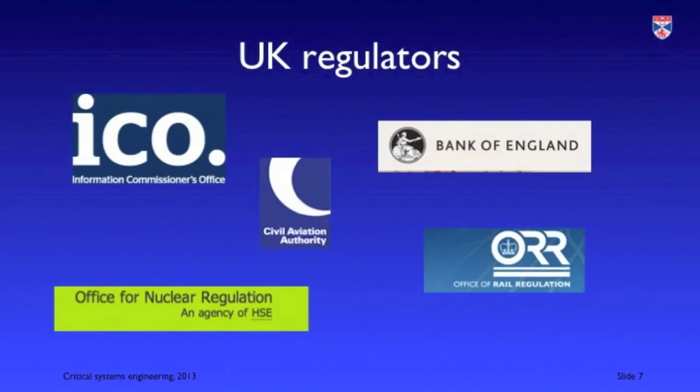Here are some examples of regulators in the UK. The Bank of England is responsible for some financial regulation. The Office for Nuclear Regulation is concerned with systems used in the nuclear industry, and the Office for Rail Regulation with systems used in the rail industry. The Civil Aviation Authority is responsible for both onboard and ground aviation systems such as air traffic control systems. The Information Commissioner's Office is responsible for ensuring that companies conform to the secure and legal management of personal data as set out in the Data Protection Act.